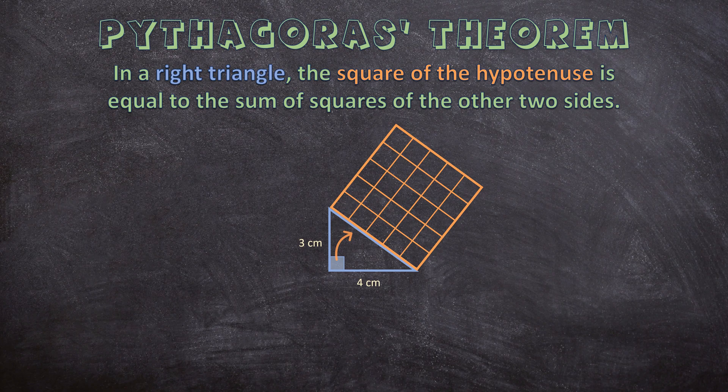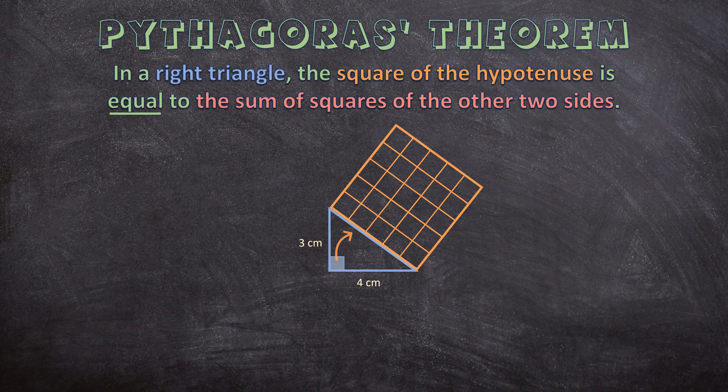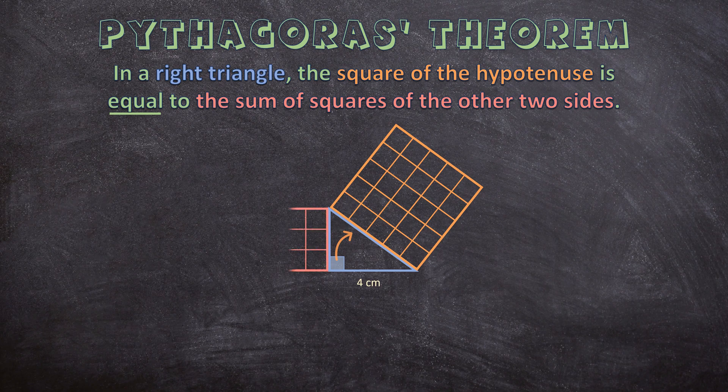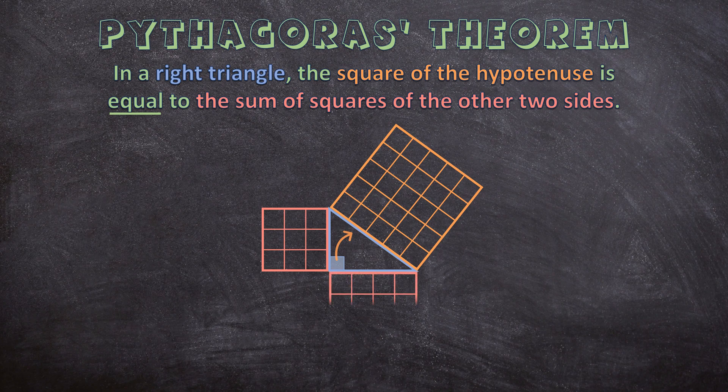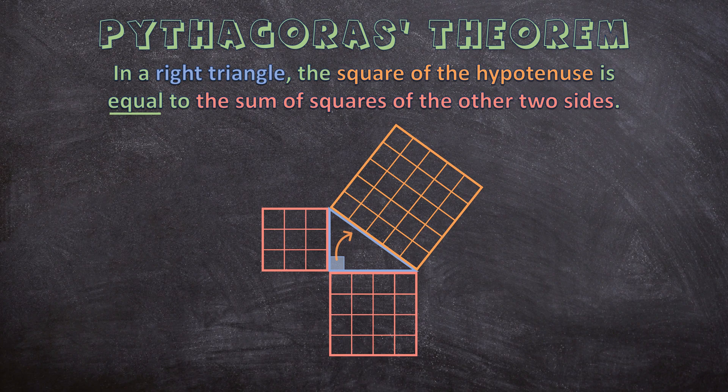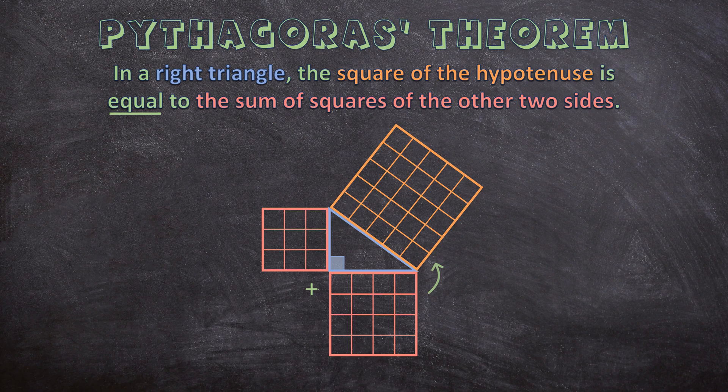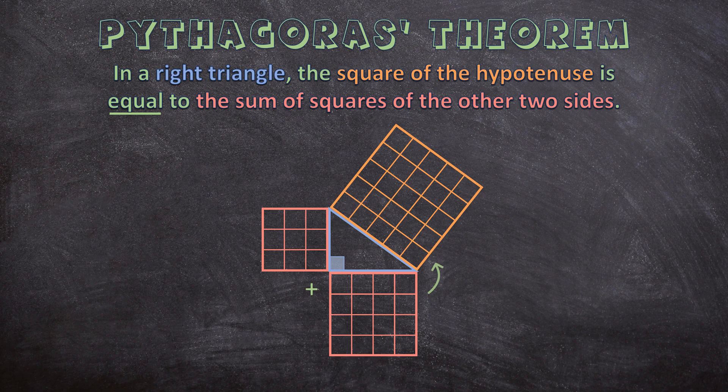And now we can carry on with the sentence. So they say is equal to the sum of the squares of the other two sides. So let's make squares of the other two sides. So first let's take the side that's three centimeters and we make a square three by three centimeters. And now the other side four centimeters and we create a square four by four centimeters. And now we will be able to understand the theorem better. So if we add the squares of these two sides together, then we'll get the answer for this square. So in a right triangle, the square of the hypotenuse is equal to the sum of the squares of the other two sides.